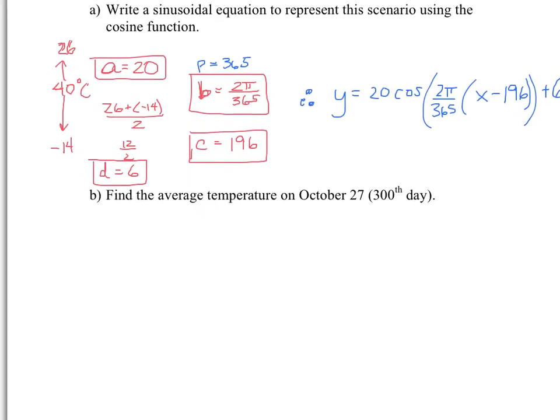And so this would be the equation of all our high, our daily high temperatures throughout the year in Winnipeg. All right, so now find the average temperature on October 27th.